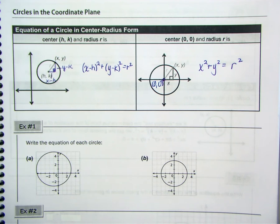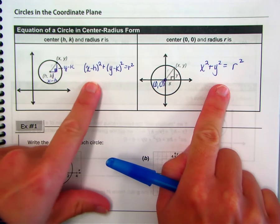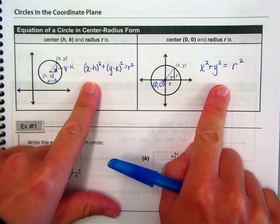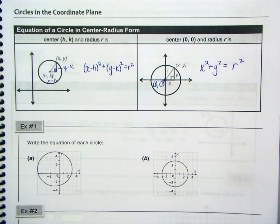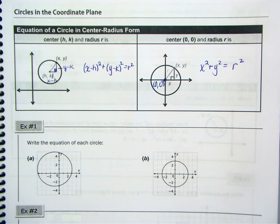These two formulas I would put on one of your index cards. In example number one, we're going to write the equation of each circle. Take a minute and note the center and radius for each circle.